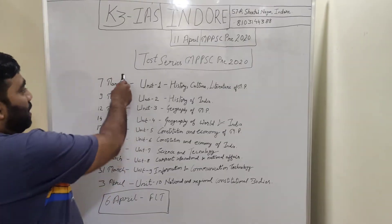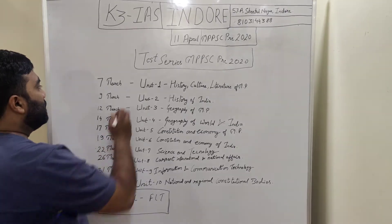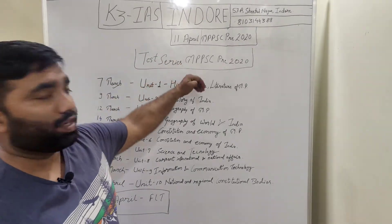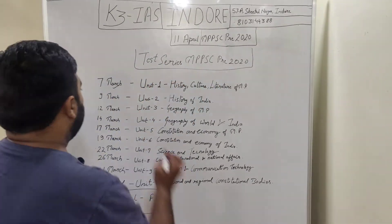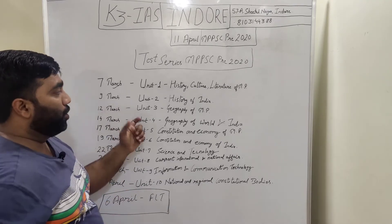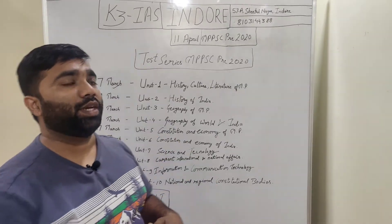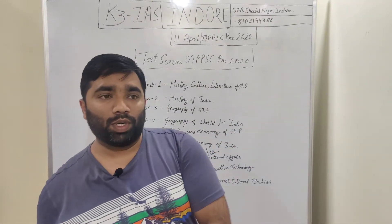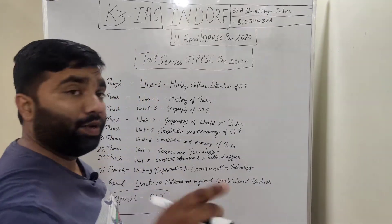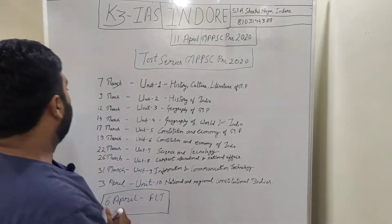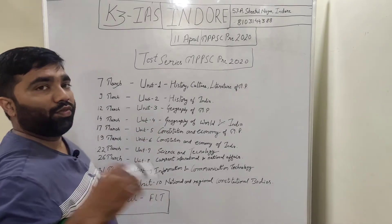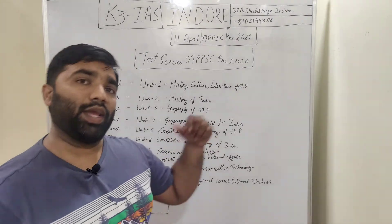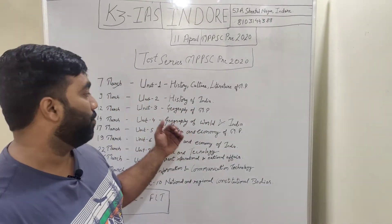7 March is Unit 1: History, Culture, and Literature of MP. 9 March is Unit 2: History of India, right from Harappa to modern history, including post-independence. 12 March is Unit 3: Geography of MP. 14 March is Unit 4: Geography of World and India.